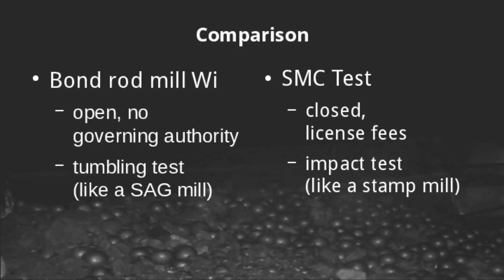At a high level, and if you want to be a bit snarky: the rod mill work index test is a tumbling test, which represents what you would see in an industrial SAG mill. The impact mechanism in the SMC test would really be more appropriate for sizing stamp mills.